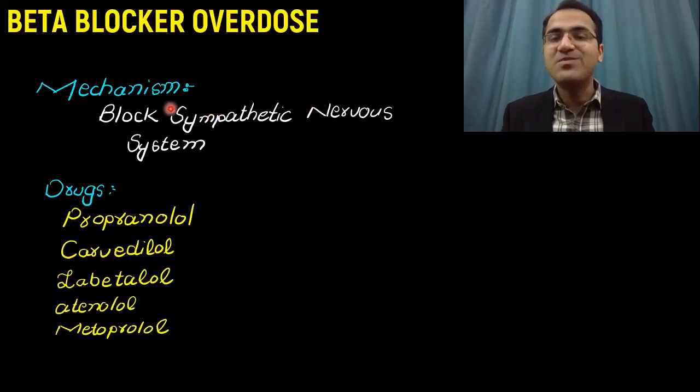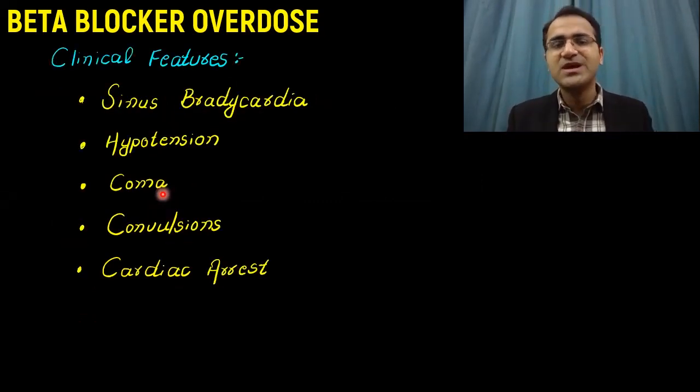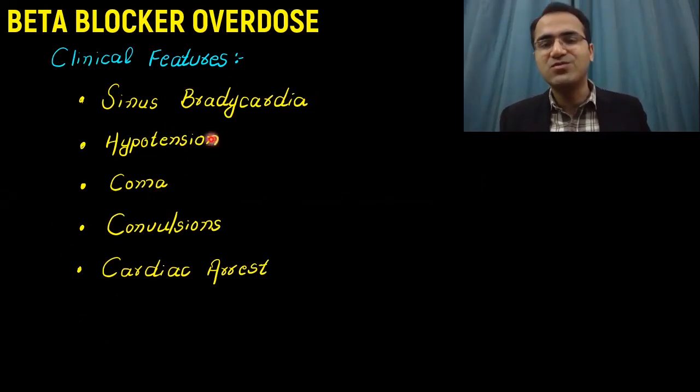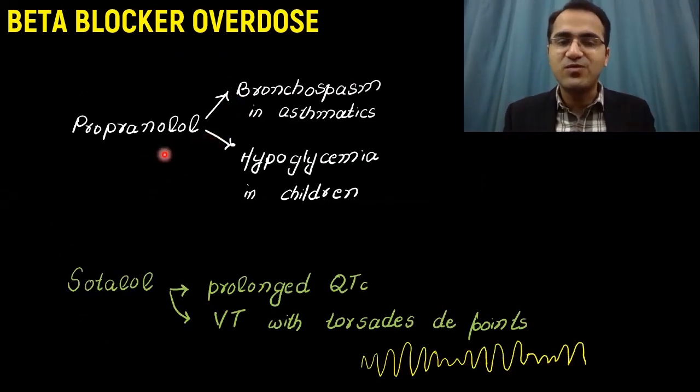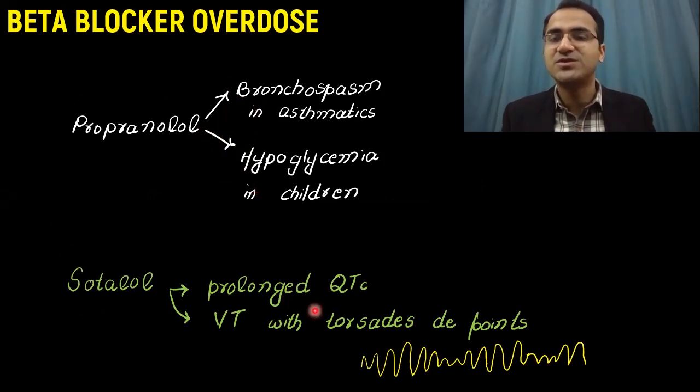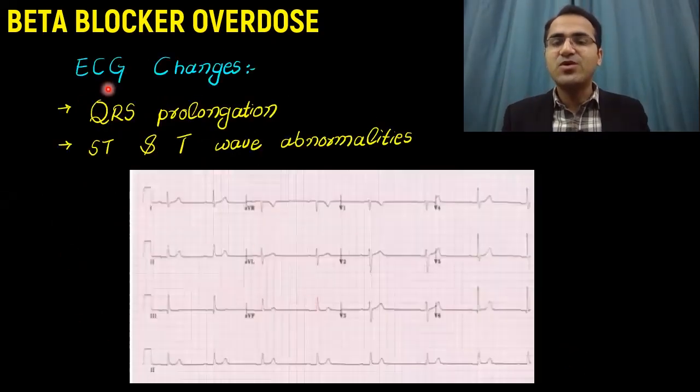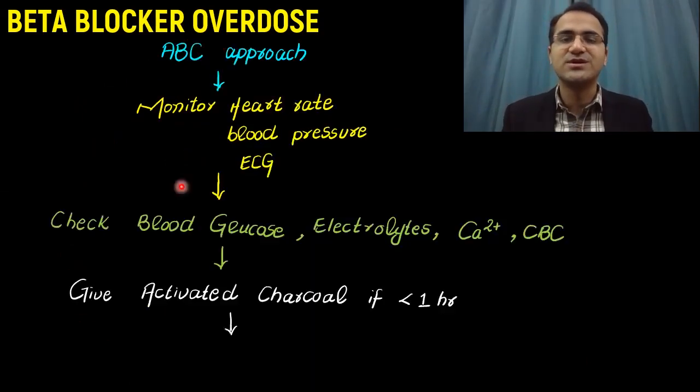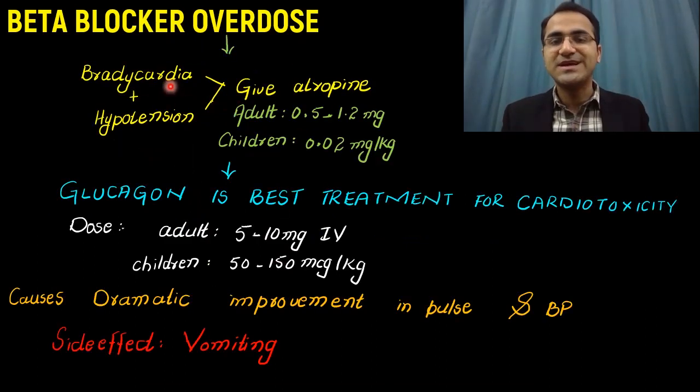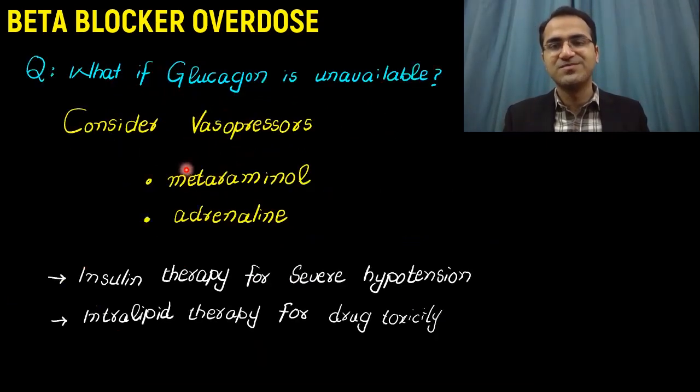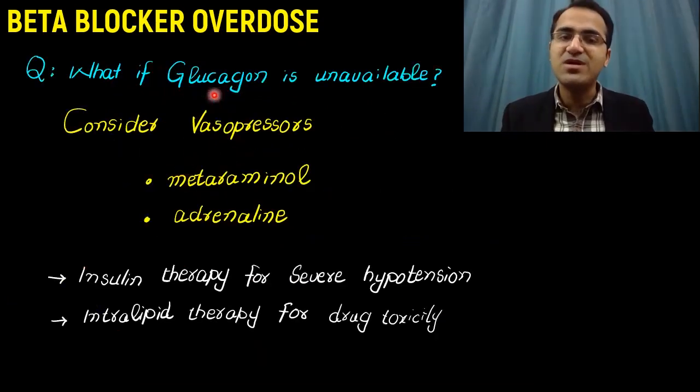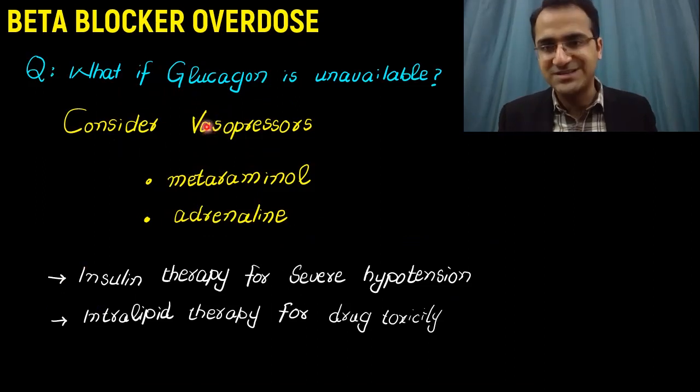In summary, we talked about the mechanism of beta blockers, drugs included in it, and the indications. Then we talked about the clinical features with beta blocker overdose, sinus bradycardia being the most important one. The effects of propranolol - bronchospasm and hypoglycemia. Sotalol - torsades de pointes. We talked about the ECG changes, bradycardia, QRS prolongation. ABC approach, check blood glucose, check electrolytes, give charcoal, give atropine, give glucagon. Glucagon is the best treatment for cardiotoxicity. If glucagon is unavailable, use vasopressors with senior consultation.